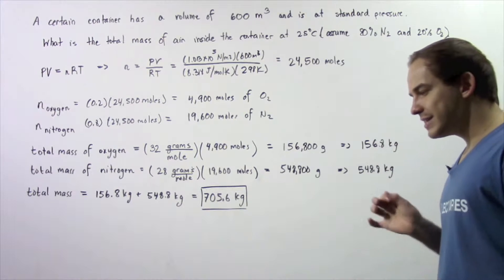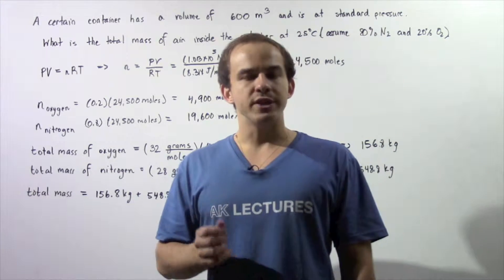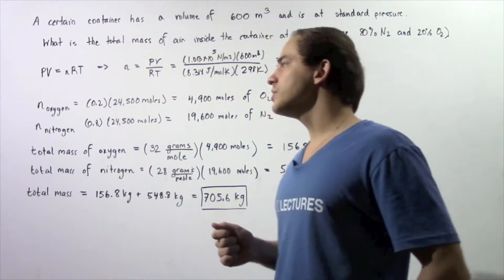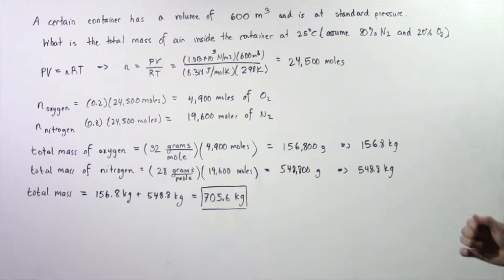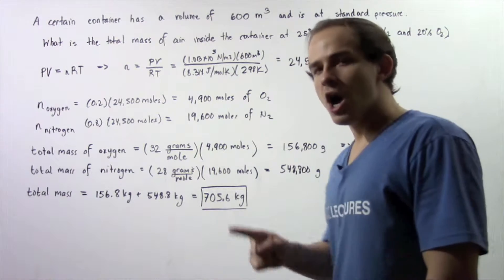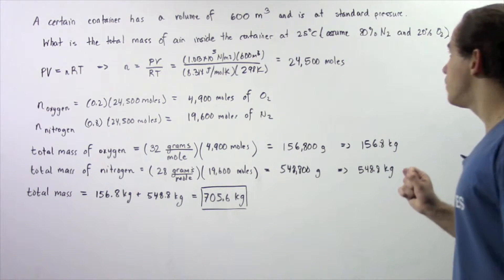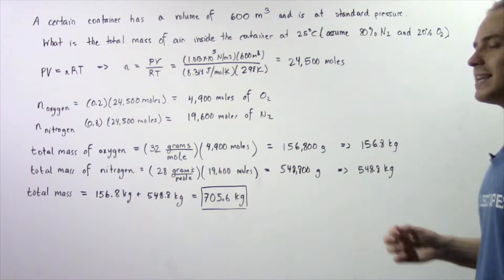Now, the standard pressure is simply 1 atm, which is equivalent to 1.013 times 10 to the 5 newtons per meter squared. What is the total mass of air inside the container at 25 degrees Celsius, assuming that air is composed of 80% nitrogen and 20% oxygen.